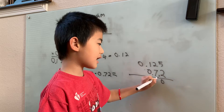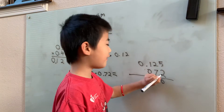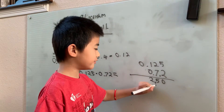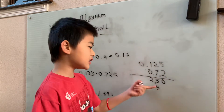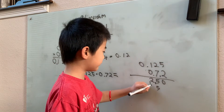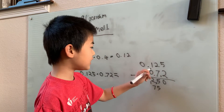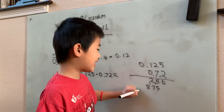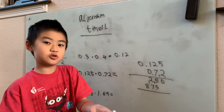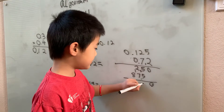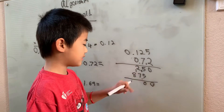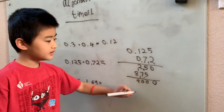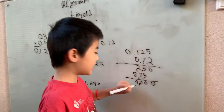So: two times five is ten, two times two is four plus one is five, two times one is two. Then one times five is five, one times two is two, one times one is one — giving us 875. Then seven times five is 35, seven times two is 14 plus three is 17, seven times one is seven plus one is eight. We get 875 and 8750. Adding them gives us 9000.